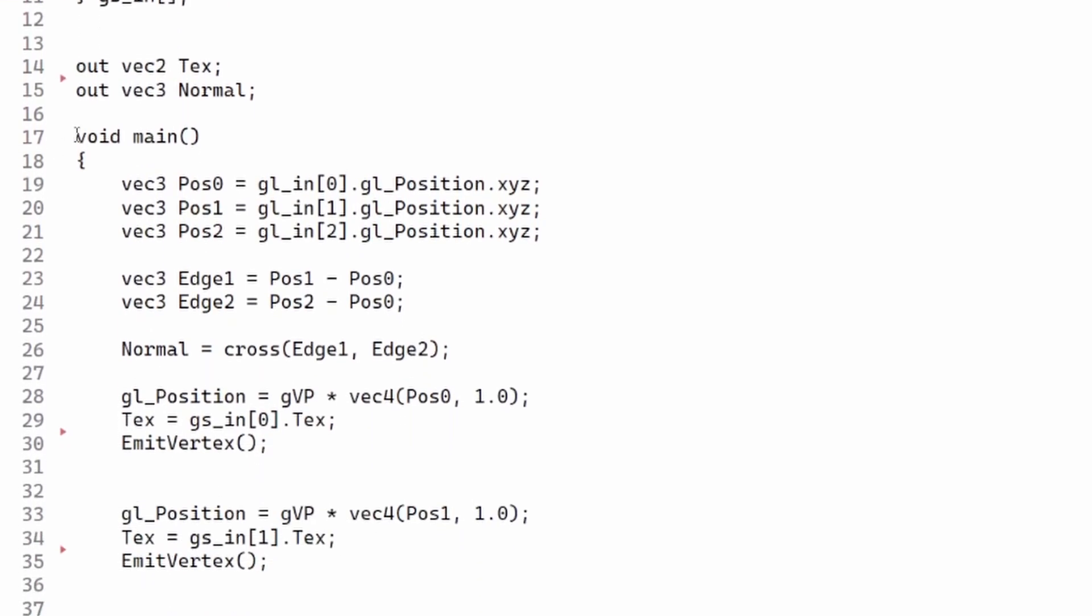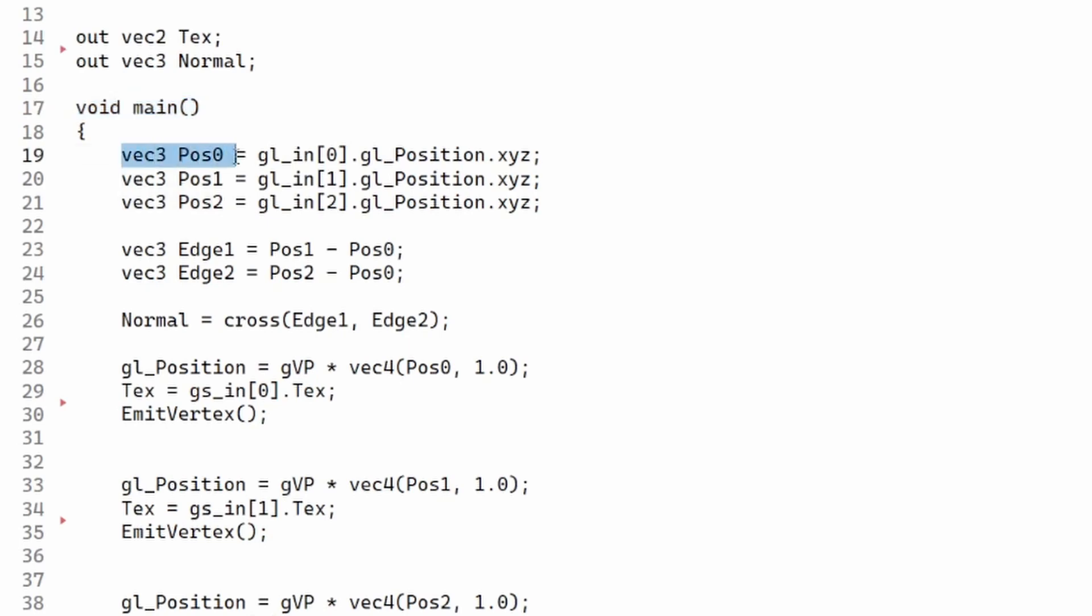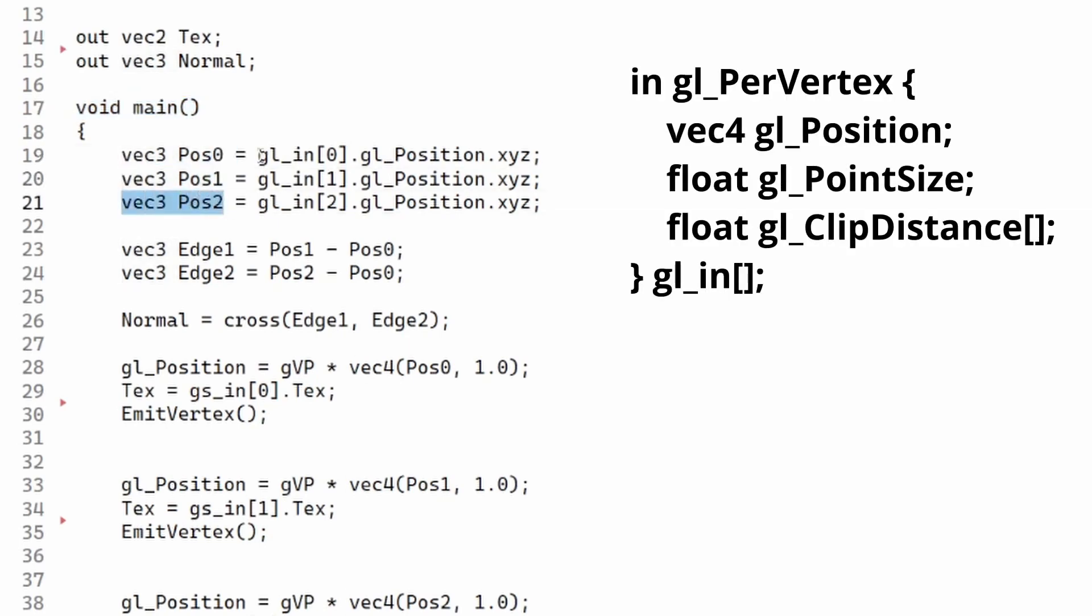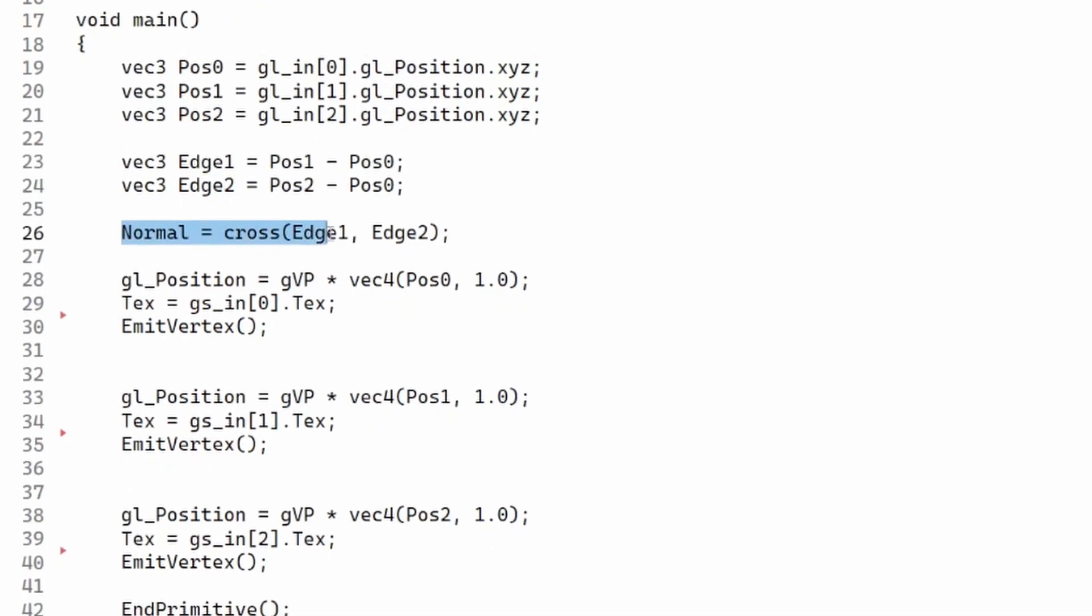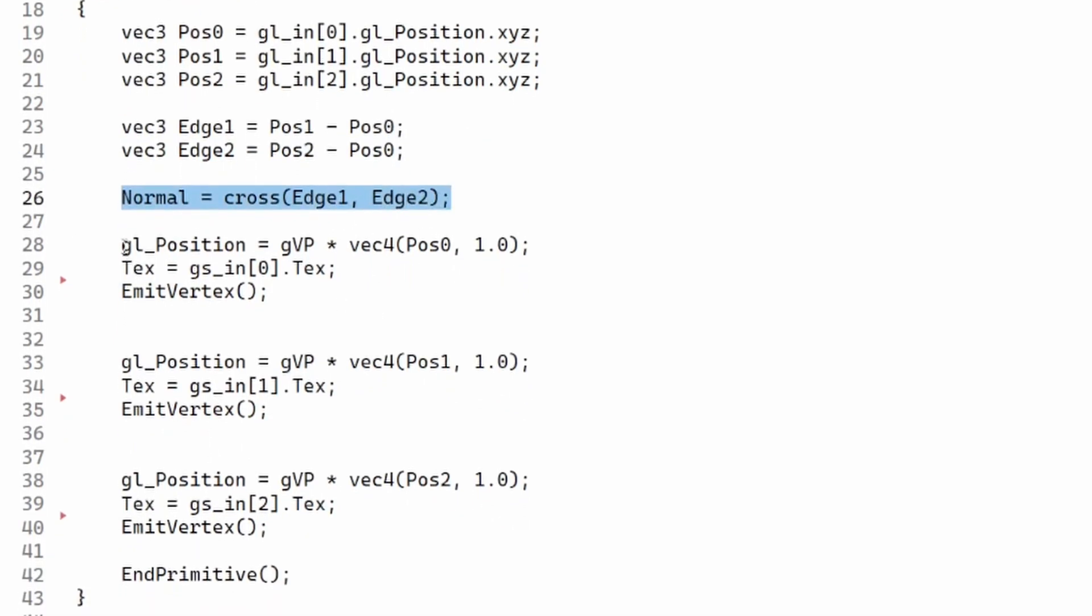In the main shader function, we begin by extracting the transformed position of the three vertices. This is available using the internal array gl_in. This array also contains a point size and a clip distance, but we will not be using these today. We can now calculate two edges of the triangle and get the normal vector using the cross product. We are now ready to start outputting vertices. This is done by setting gl_Position as well as the regular output attributes. Every time we call EmitVertex, one output vertex is generated based on the current value of the output attributes. Since the position in this demo is given in world space, we just need to multiply it by the view projection matrix. This must be done once for each vertex.